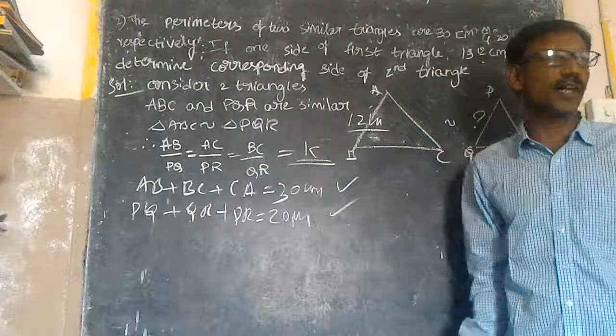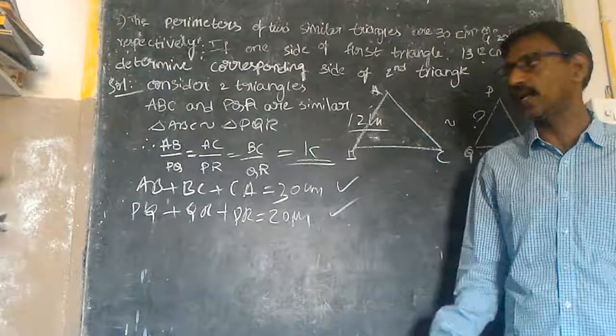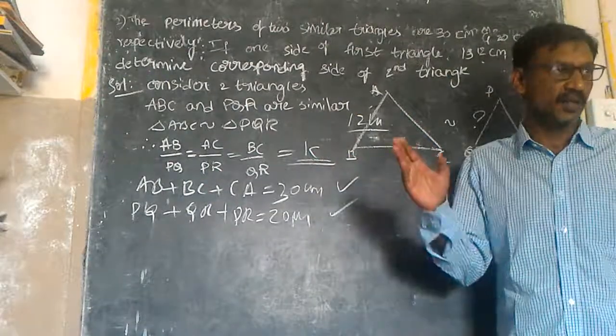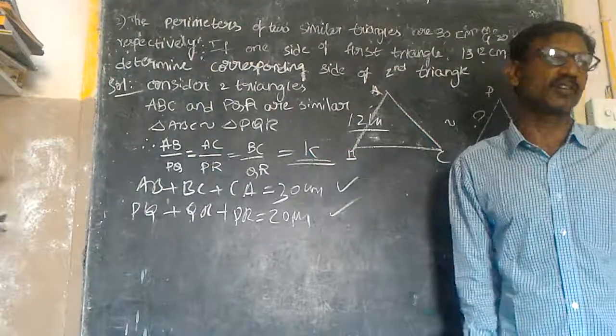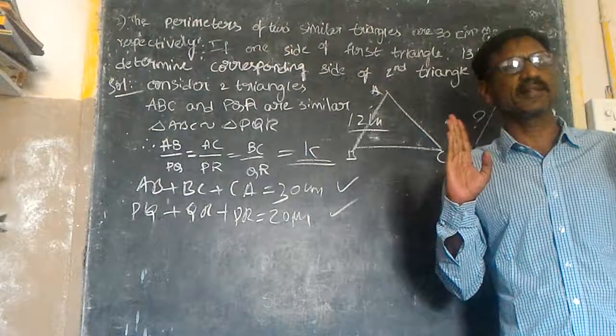K greater than one means enlarged. K less than one means reduced. K is equal to 1 means congruent triangles.